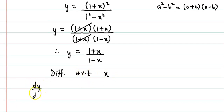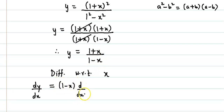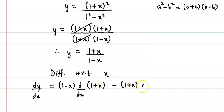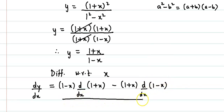So we have dy by dx is equal to, applying the quotient rule, we get 1 minus x into derivative of 1 plus x minus 1 plus x into derivative of 1 minus x, all divided by 1 minus x the whole square.